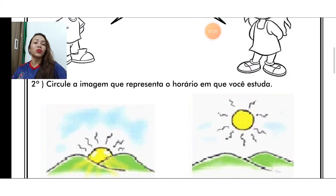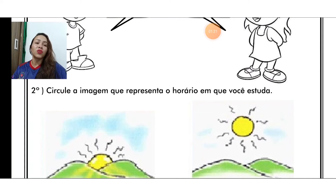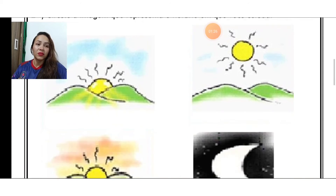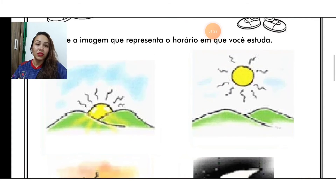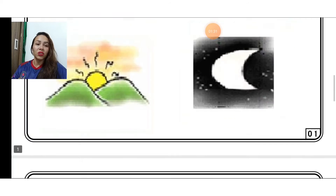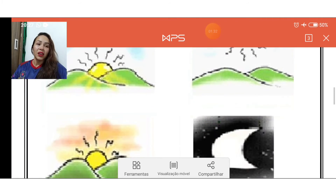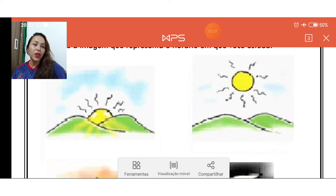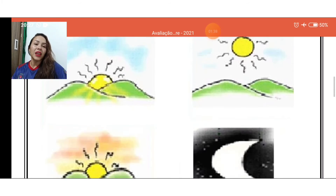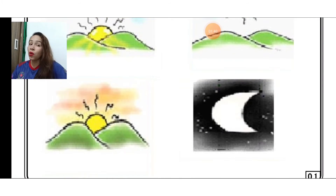Questão de número dois. Circule a imagem que representa o horário que você estuda. Qual desses horários é o que você estuda? Circula aí de acordo com o horário que você está na escola: se você estuda pela manhã, pela tarde, pela tardezinha ou à noite. Ok?